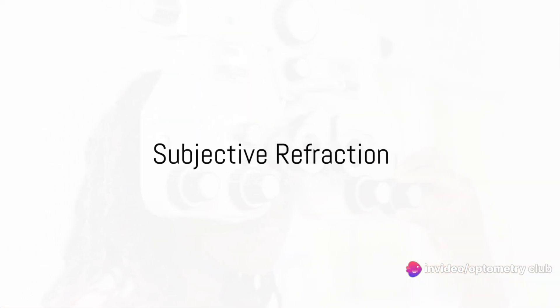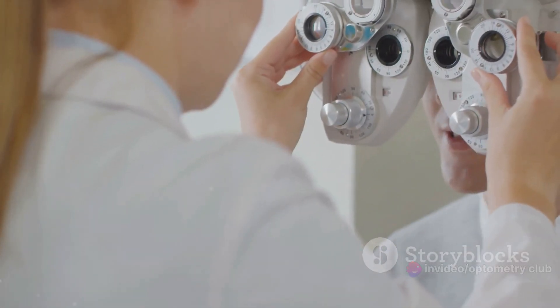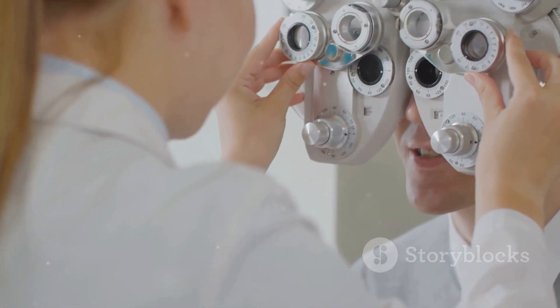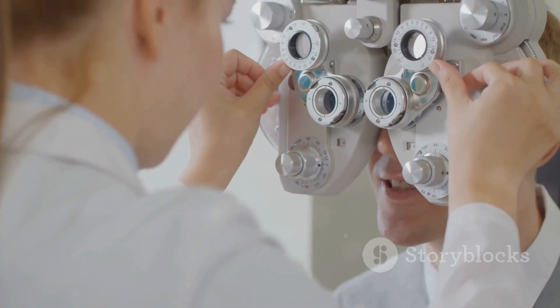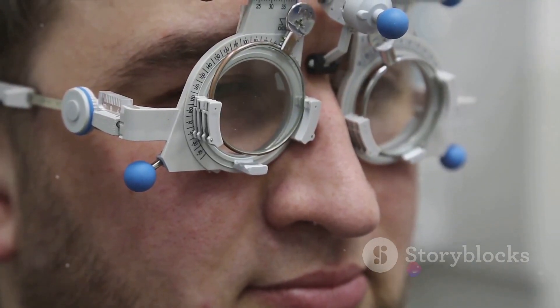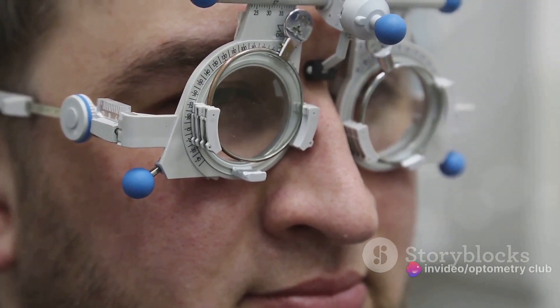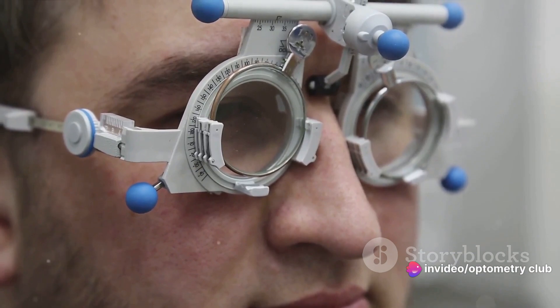Following this, subjective refraction takes place. Here, you're asked to look through a device called a phoropter, which contains different lenses. The optometrist switches between lenses while asking which lens helps you see the clearest. This step fine-tunes the results from the retinoscopy.